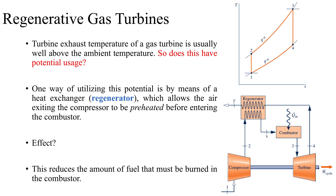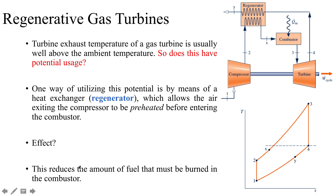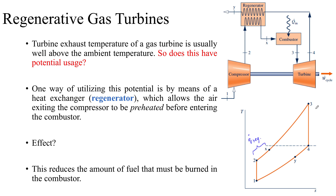To visualize this better, let's look at the TS diagram with the regenerator included. We now have the 2 to x process happening within the regenerator — the heating up or heat content being added is occurring inside the regenerator, so Q dot is due to the regenerator. Then from state x to state 3, this process is the one happening in the combustion chamber.